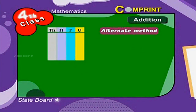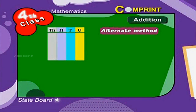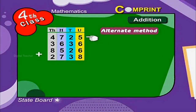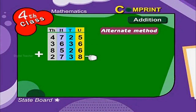Alternate method. The same numbers can be added like this. Arrange the numbers in columns and first add the 1's. 5 plus 6 plus 6 plus 8 is equal to 25.